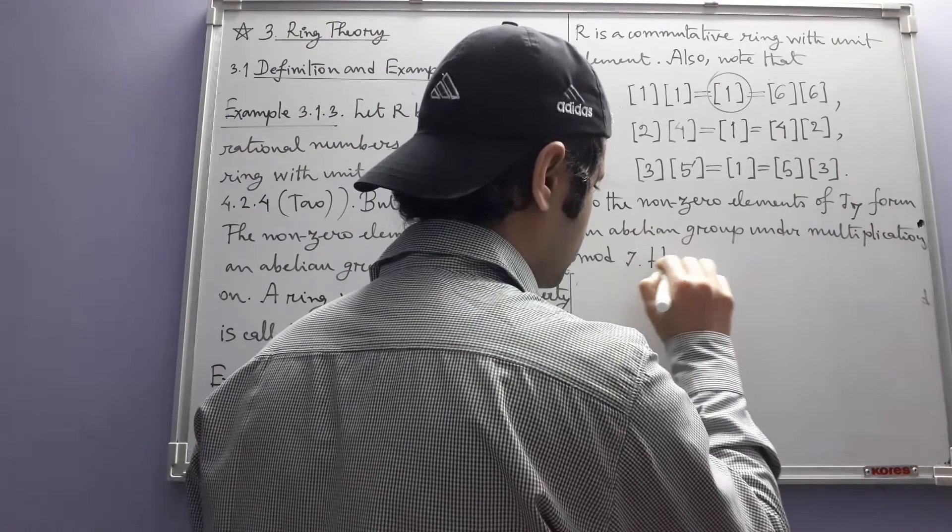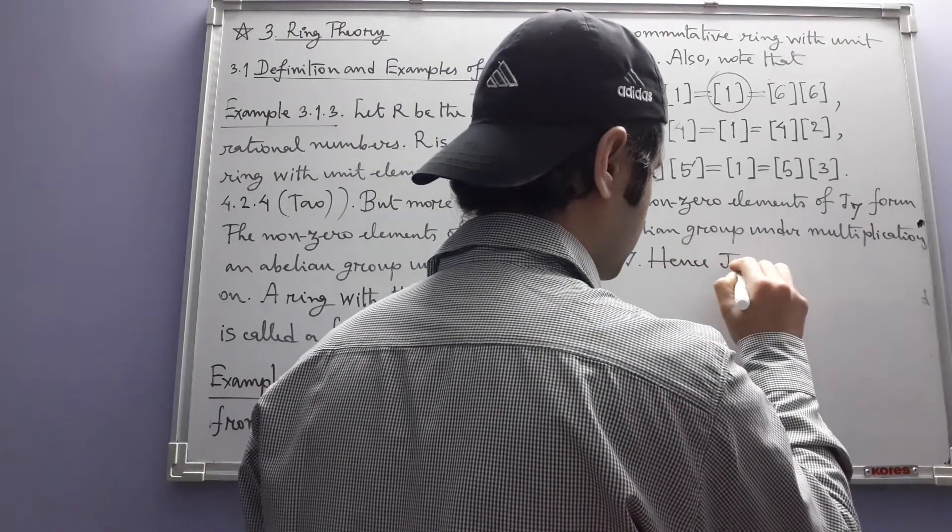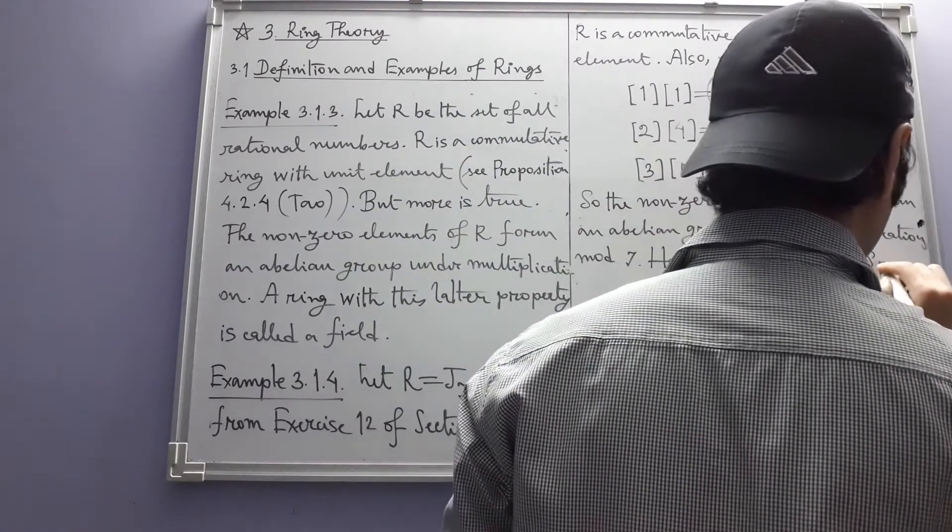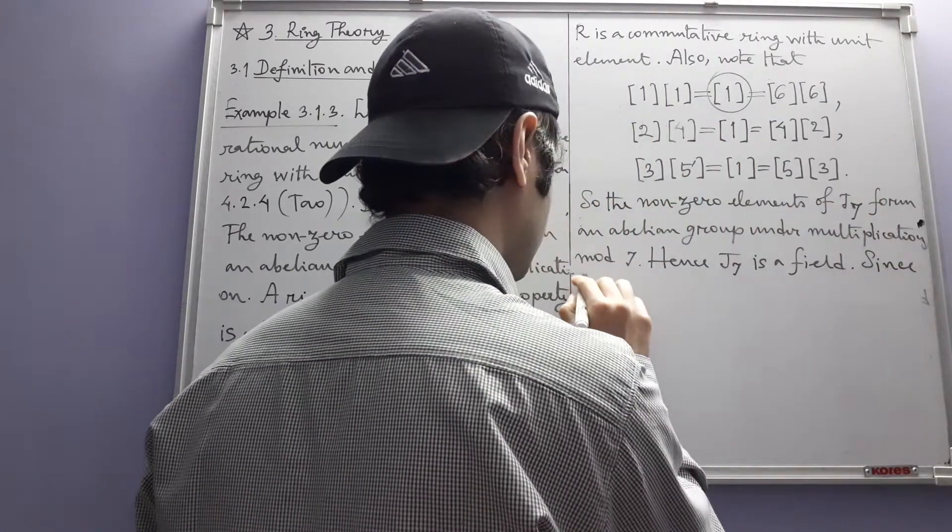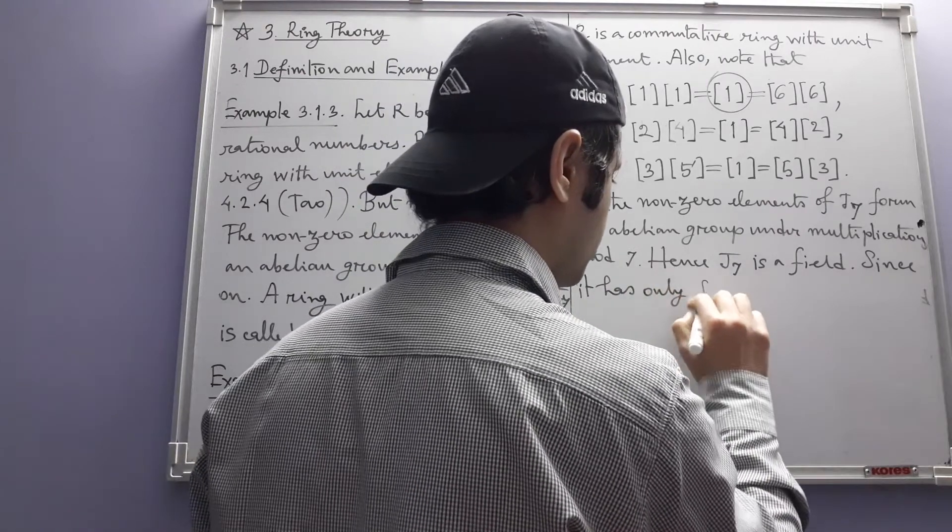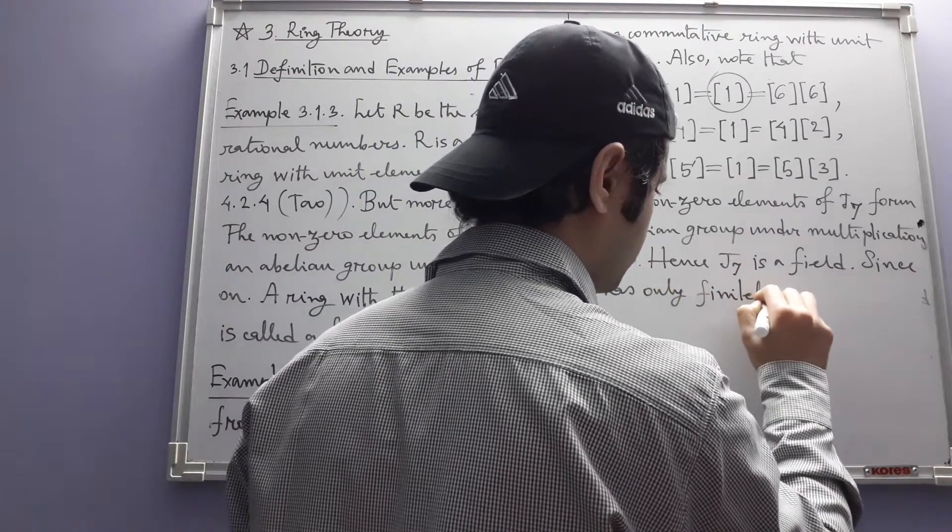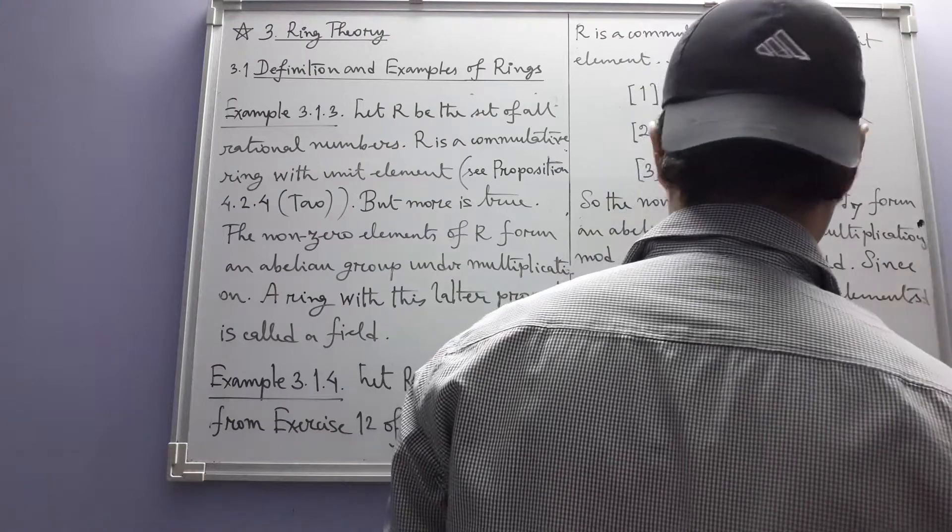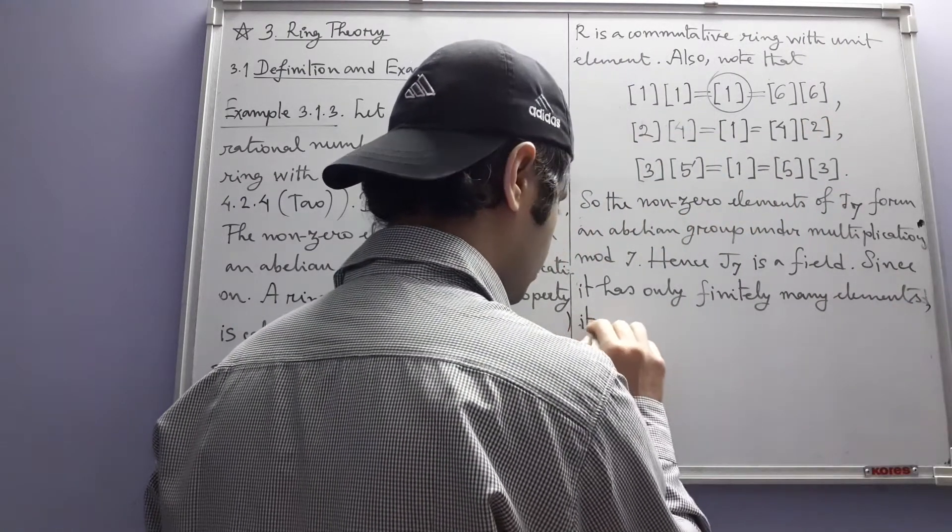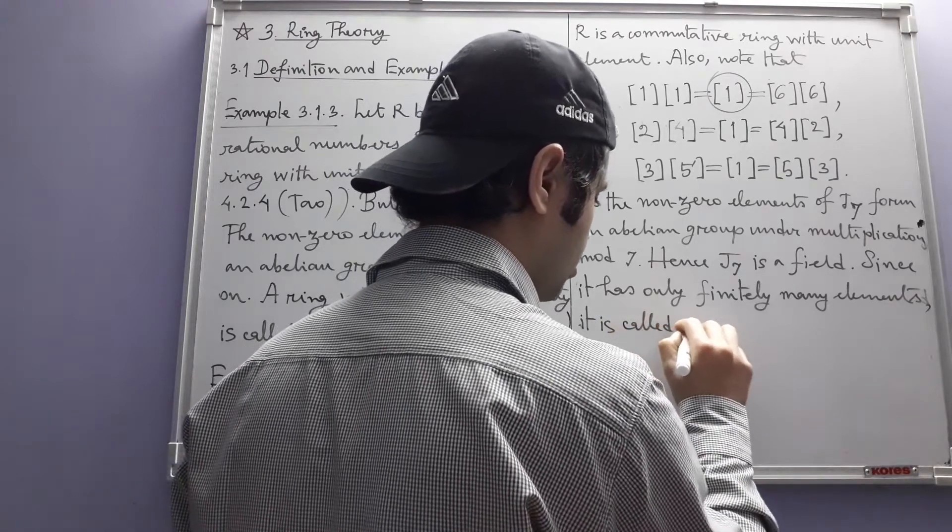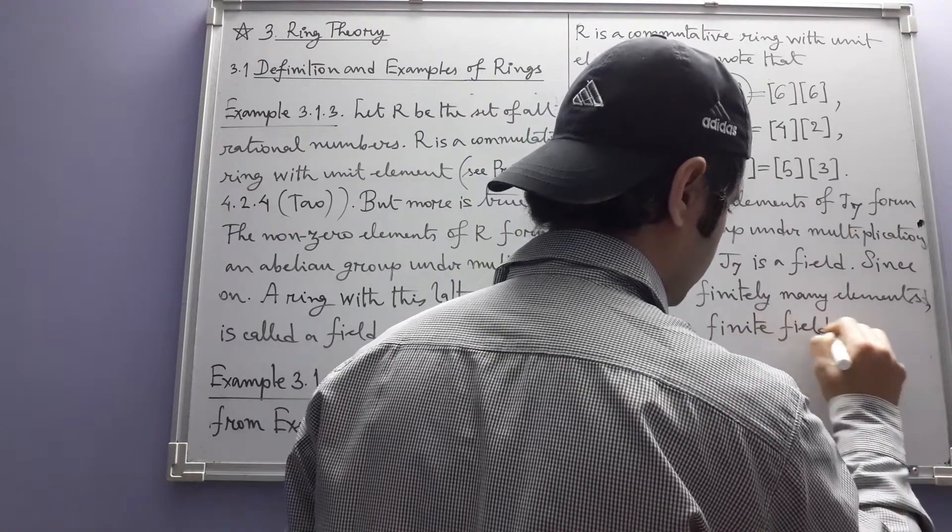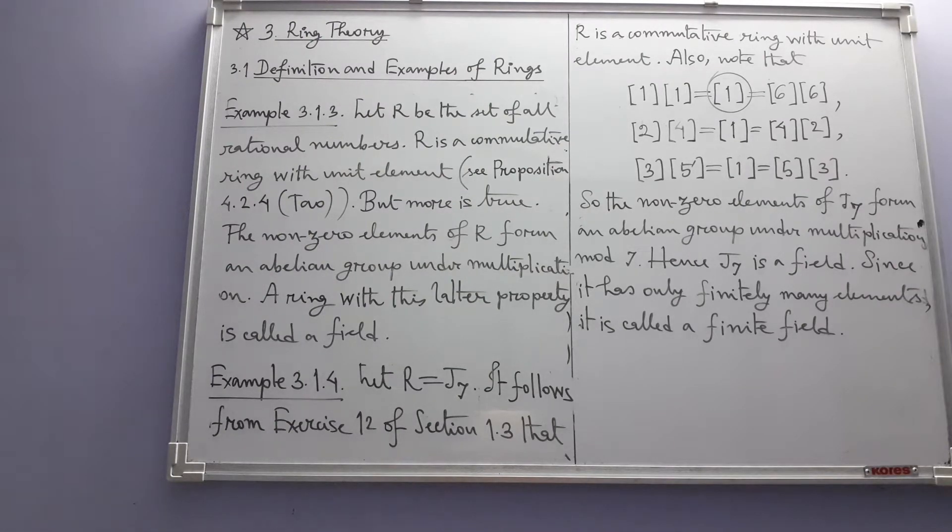Hence J7 is a field. It has only finitely many elements. It is called a finite field. So this is an example of things called finite fields.